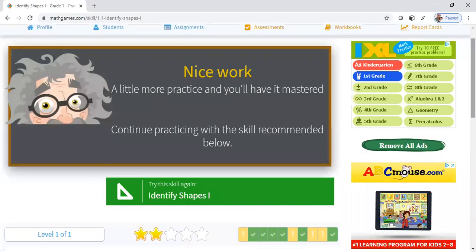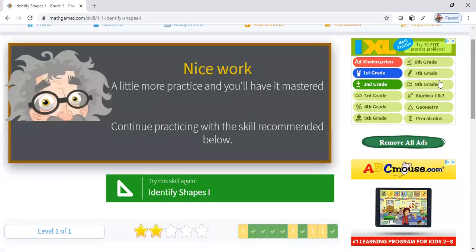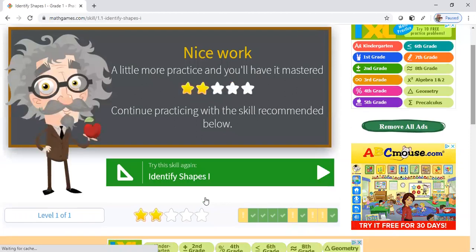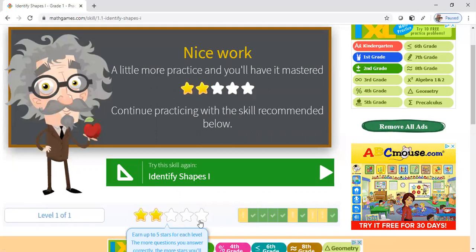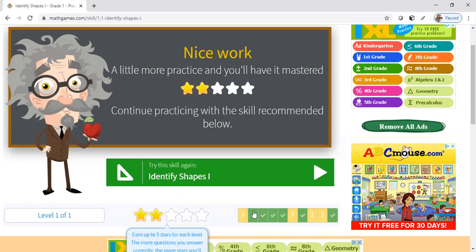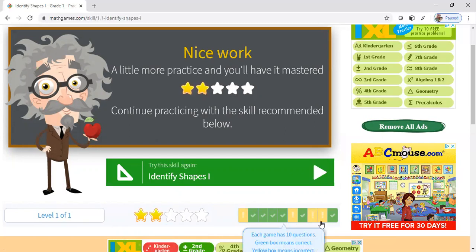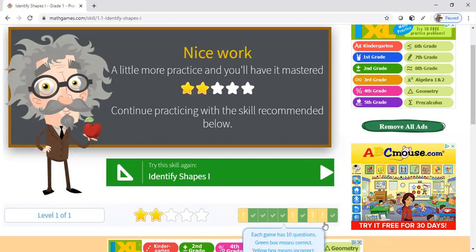So at the end it's going to have, like I said, the stars at the bottom. It'll have two stars out of five because that was what the goal was—to get out of five. And then at the bottom it shows each student, out of ten questions, how many they got right and how many they got wrong.